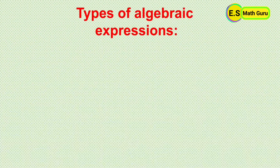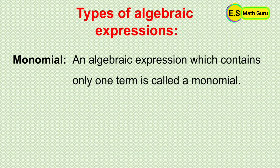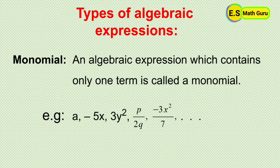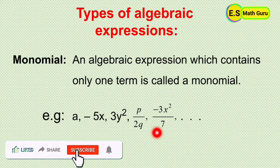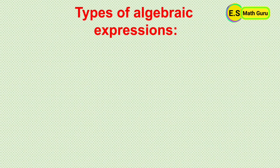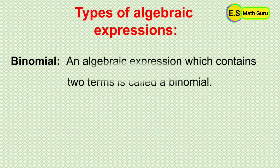Next, types of algebraic expressions. Monomial: an algebraic expression which contains only one term is called a monomial. For example, a, minus 5x, 3y squared, p by 2q, minus 3x squared whole by 7, and so on.